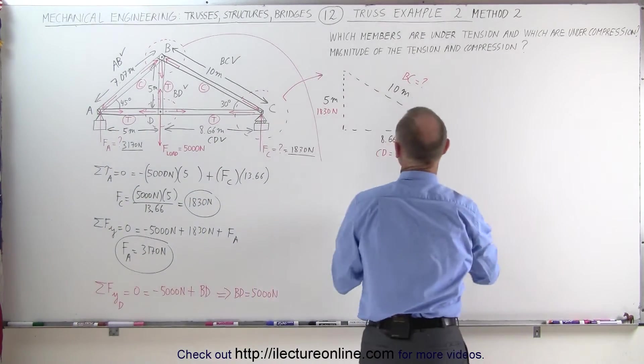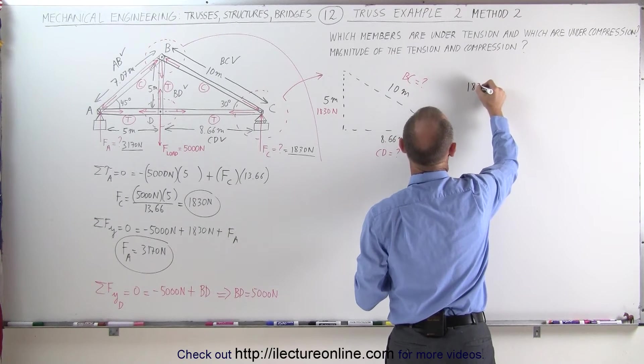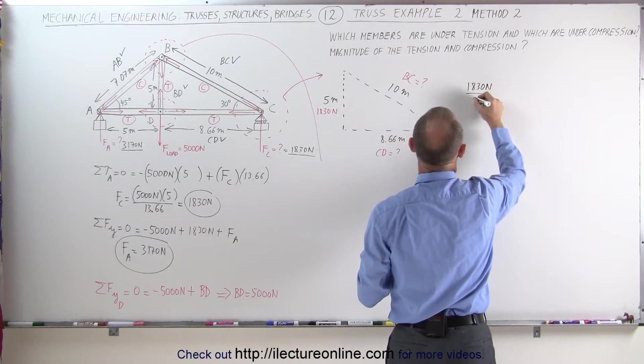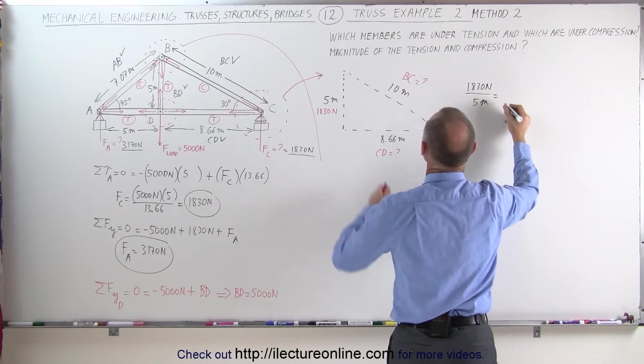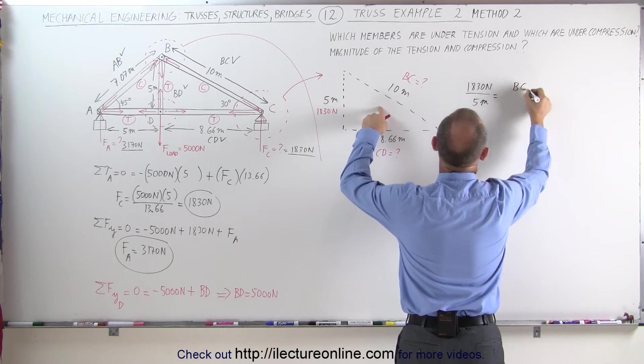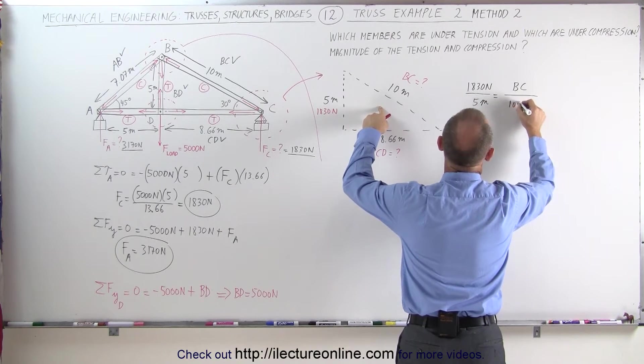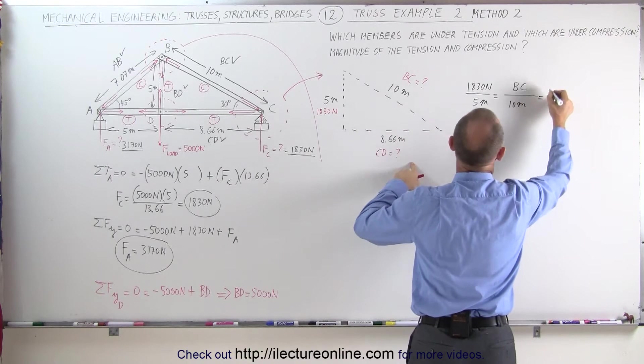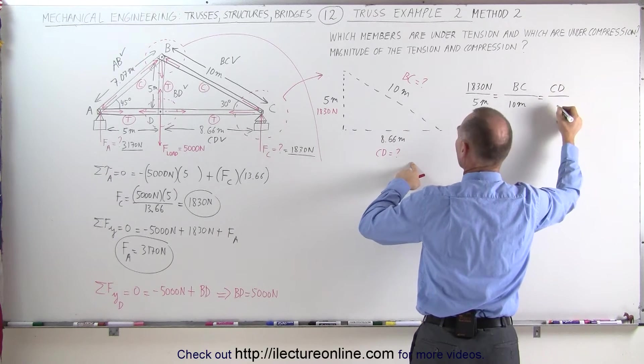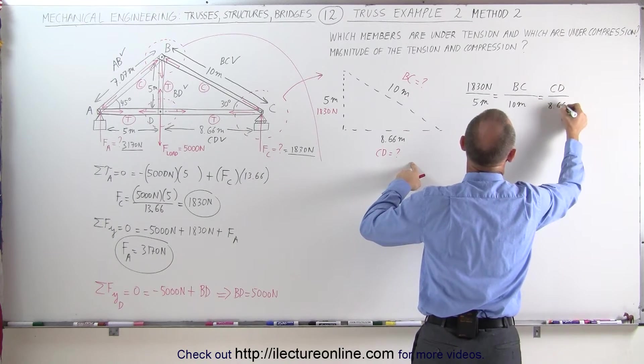In other words, we can write that 1830 N divided by 5 meters is equal to the magnitude of the force on BC divided by 10 meters, which is equal to the magnitude of the force on CD divided by 8.66 meters.